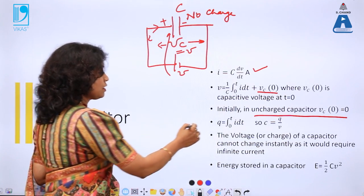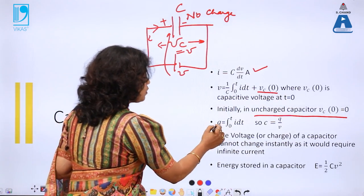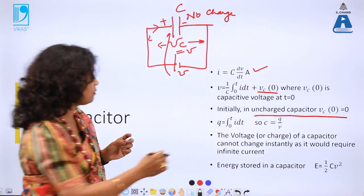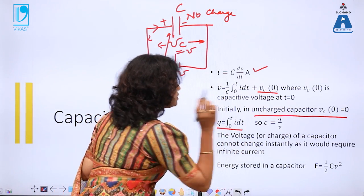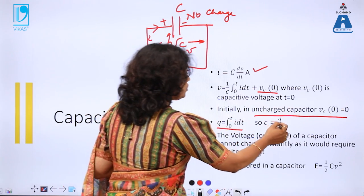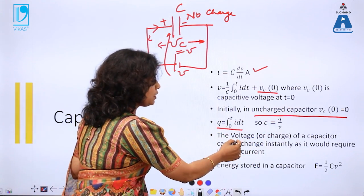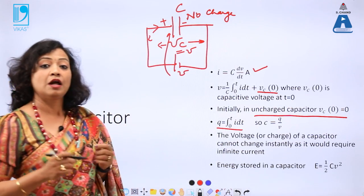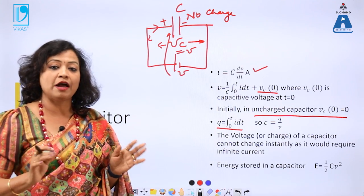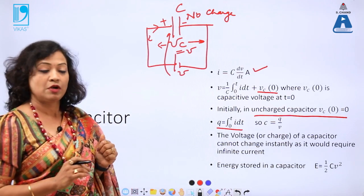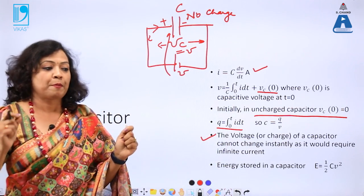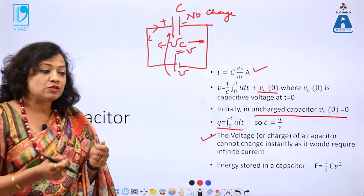The charge stored in the capacitor is ∫I dt from 0 to T, and from this I can find C: the charge Q = C × Vc. The important concept is that the voltage across a capacitor cannot be changed instantly — it requires infinite current to change this value instantly.